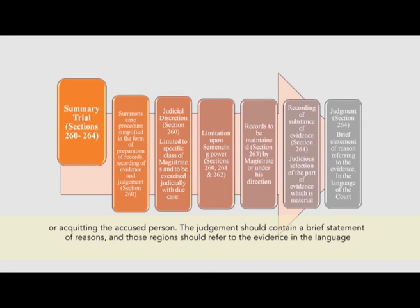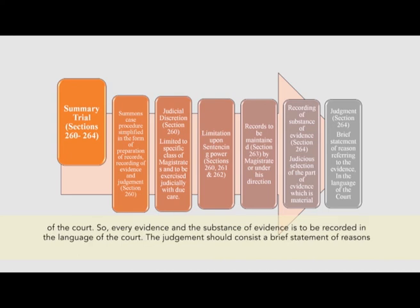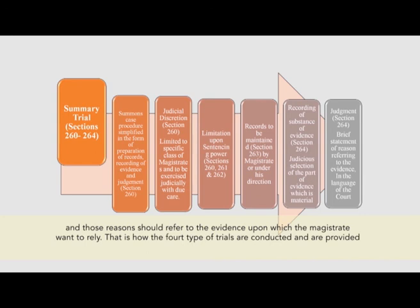The judgment in a summary trial should contain a brief statement of reasons, and those reasons should refer to the evidence in the language of the court. Every piece of evidence and the substance of evidence is to be recorded in the language of the court. That is how the four types of trials are conducted and provided under the Criminal Procedure Code.